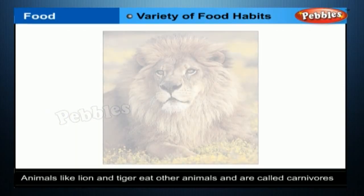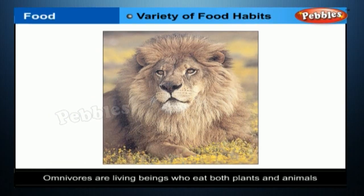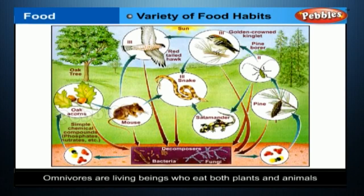Some animals like the lion and tiger eat other animals. These are the carnivores. There is another category, the omnivores. These are living beings who eat both plants and animals, like humans, crow, squirrels, and cockroach.